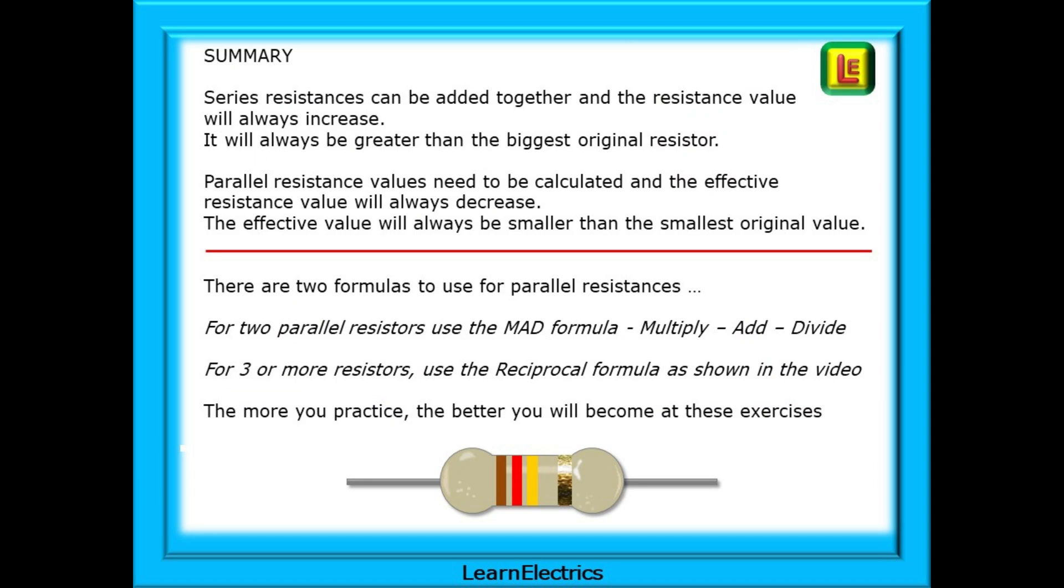A quick summary. Series resistances can be added together and the resistance value will always increase. It will always be greater than the biggest of the original resistors. Parallel resistance values need to be calculated and the effective resistance value will always decrease. The effective value will always be smaller than the smallest original value. There are two formulas to use for parallel resistances. For two parallel resistances use the MAD formula: multiply, add, divide. And for three or more resistors use the reciprocal formula as shown in the video.